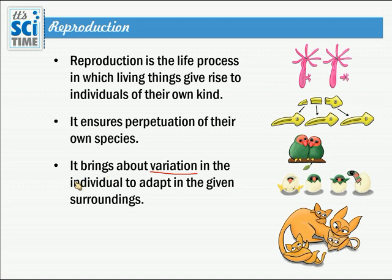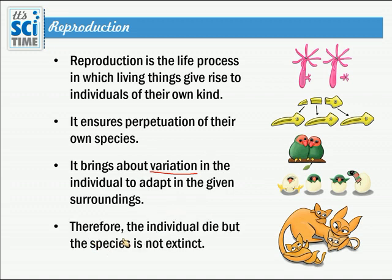We learned in Grade 9 that there are different genetic variations among us, and those variations also occur due to reproduction. Finally, even though individual organisms die, the species is not extinct. If old individuals die, new young ones — called offspring — exist. The parents die but the new ones grow, and new births continue.